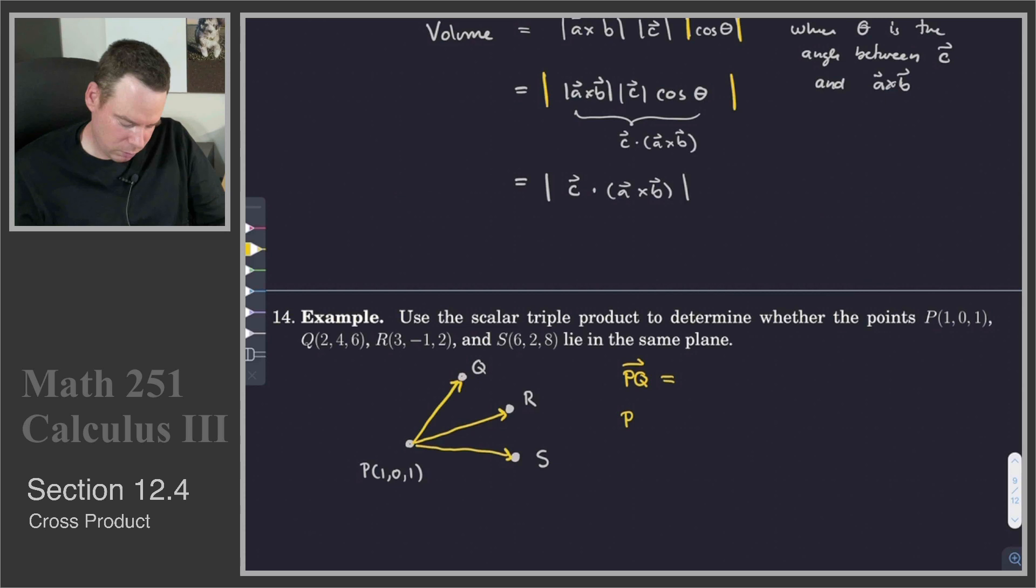then it's a little bit easier to figure out what these are. So what these vectors P to Q, P to R, and P to S are, because if I go tip minus tail, I just take Q, R, and S, and subtract 1 from the X component and the Z component, because P is just 1, 0, 1. So subtracting 1 from the X component and 1 from the Z component, I get 1, 4, 5.